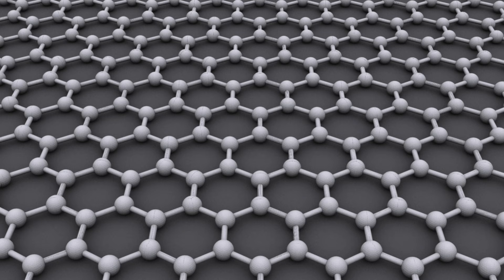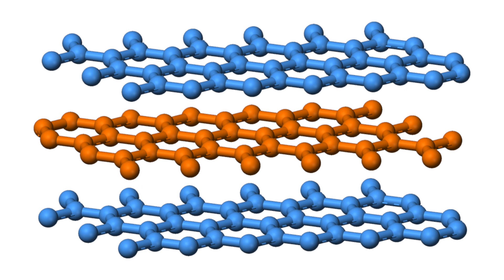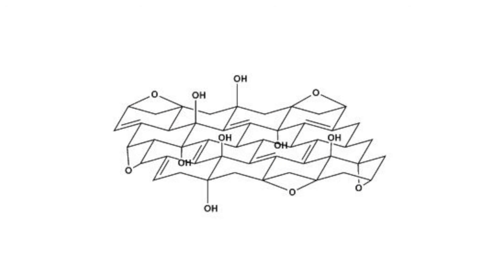Graphene on the other hand is single atom thick sheets of carbon. It also comes in some varieties, in this case based on how many layers remain stacked together, how large the individual sheets are, and whether or not the sheets have been oxidized.